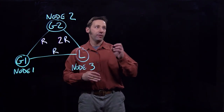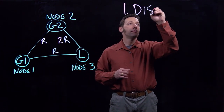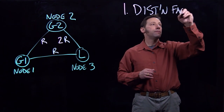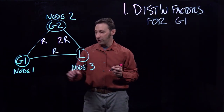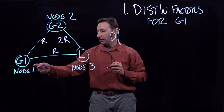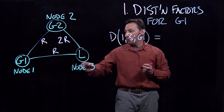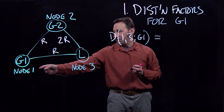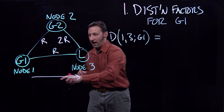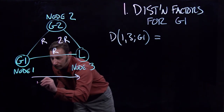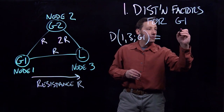The first step is to calculate the distribution factors for G1. We're going to start with the distribution factor on line 1 to 3 from G1. The numerator is going to be the inverse of the resistance of the path that goes from node 1 to node 3 — one path with resistance R. So that's going to go in the numerator.